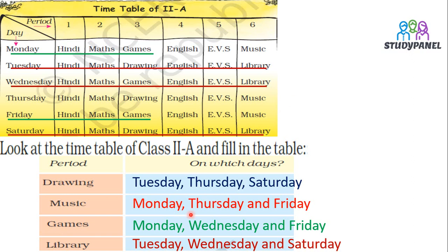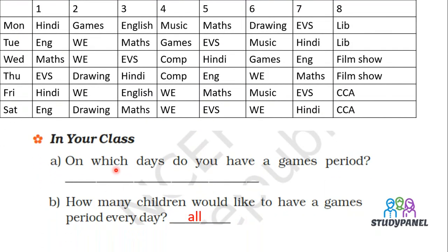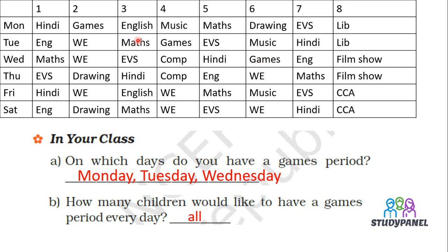We have to answer these questions on the basis of the table. If you can find that particular period on a particular day, this would not be difficult. This is the timetable of our class. On which days do you have a games period? On Monday it is the fourth period, on Tuesday it is also shown, and on Wednesday it is the sixth period.